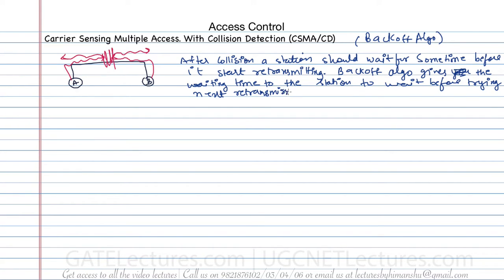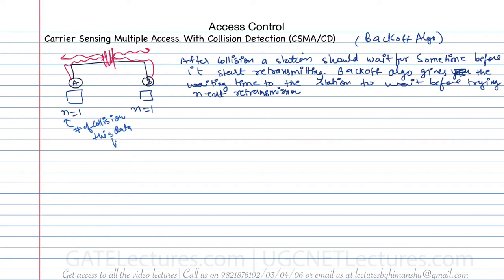So how does this backoff algorithm work? Assuming station A and station B are there, and this is data packet number one which they are sending. Here, n represents the number of collisions this data packet has faced. For example, if A and B are both sending data at the same time, there is a collision. Therefore, for data packet D1, the number of collisions is now one.